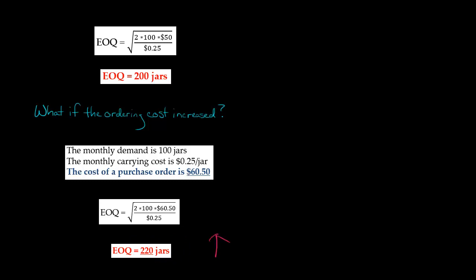So if somebody asks how many jars of peanut butter should we order — 220, 20 more than before. Why do we want to buy more jars of peanut butter now? The only thing that changed is the cost of a purchasing order. If it gets more expensive to do an order, the ordering cost goes up, and we say: when we actually go to make an order, let's buy more so we can do fewer orders. If orders become more expensive, we want to order peanut butter less frequently, so when we do order it, we order a bigger amount.